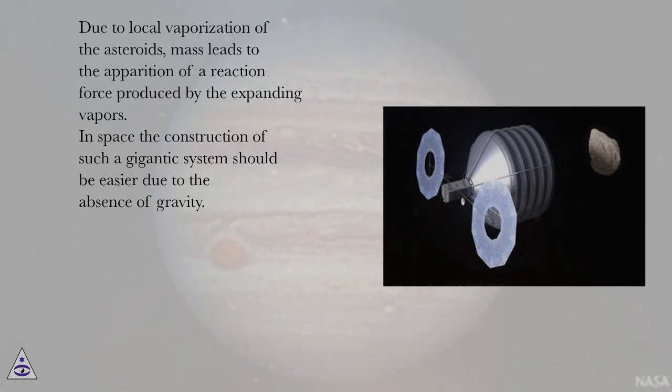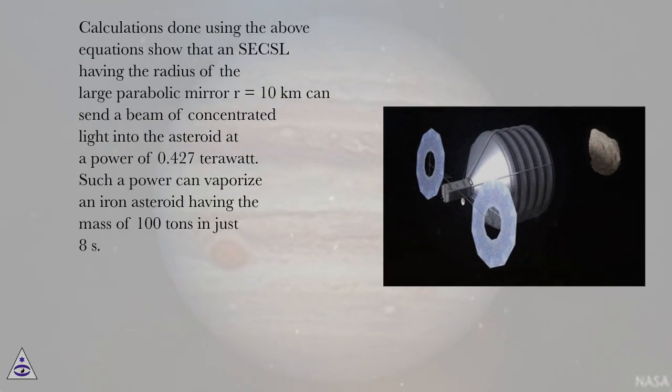In space, the construction of such a gigantic system should be easier due to the absence of gravity. Calculations done using the above equations show that a SECSL having the radius of the large parabolic mirror R = 10 kilometers can send a beam of concentrated light into the asteroid at a power of 0.427 terawatt. Such a power can vaporize an iron asteroid having the mass of 100 tons in just 8 seconds.